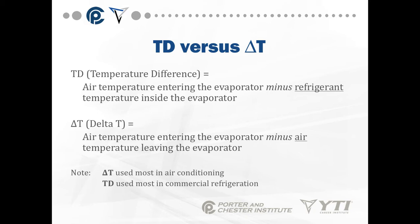Temperature difference versus delta T is pretty important. In an evaporator, temperature difference is the air temperature entering the evaporator minus the refrigerant temperature inside the evaporator. Delta T is the difference between the air entering the evaporator, the refrigerant temperature inside the evaporator, and the air leaving the evaporator.